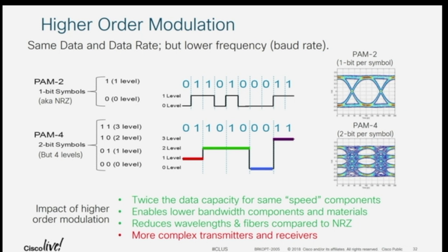With PAM4 technology, we take two bits together and combine those to create a level. You have four levels and you get eye diagrams like this. The advantage is you get twice the data capacity for the same speed of components. This allows you to use fewer components, fewer fibers, fewer wavelengths, but it does mean you have much more complex receivers because you have to figure out how to separate and undo the effects of the transmission.